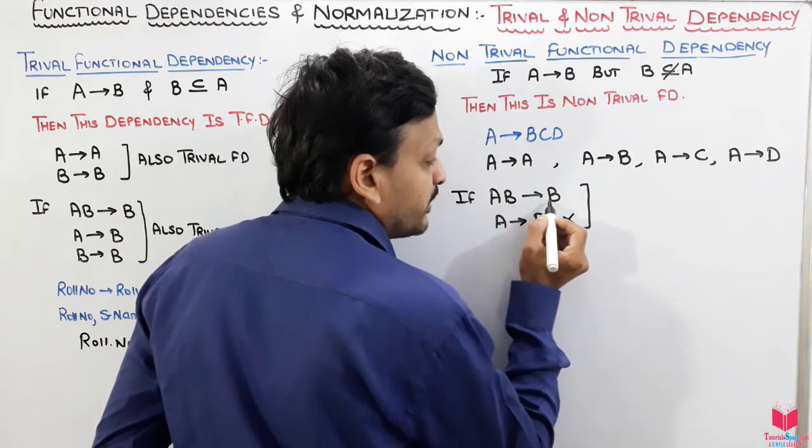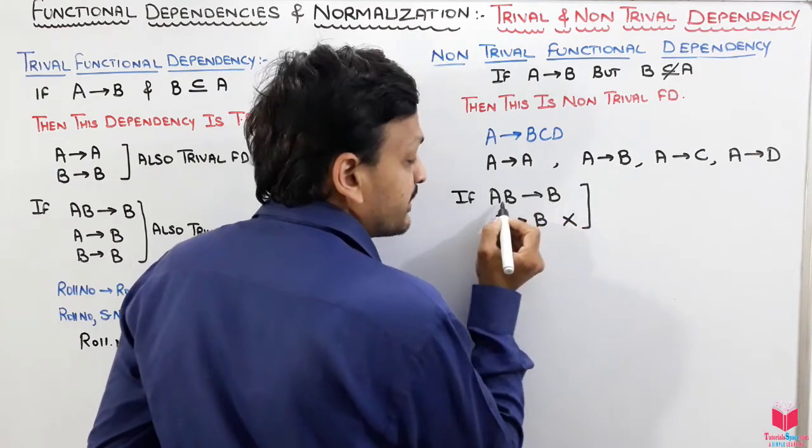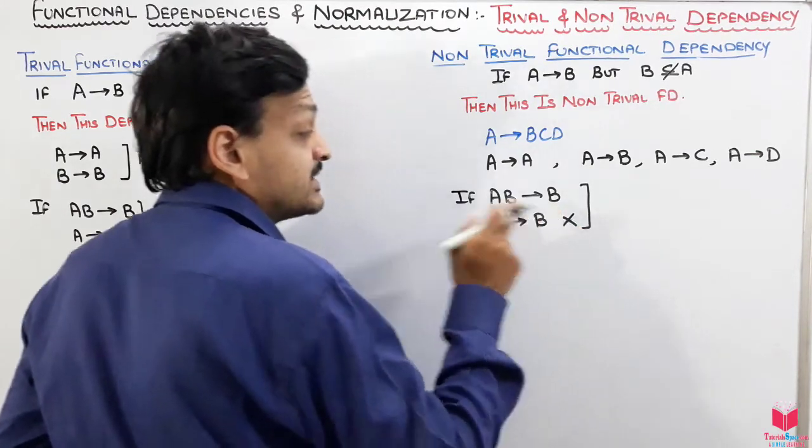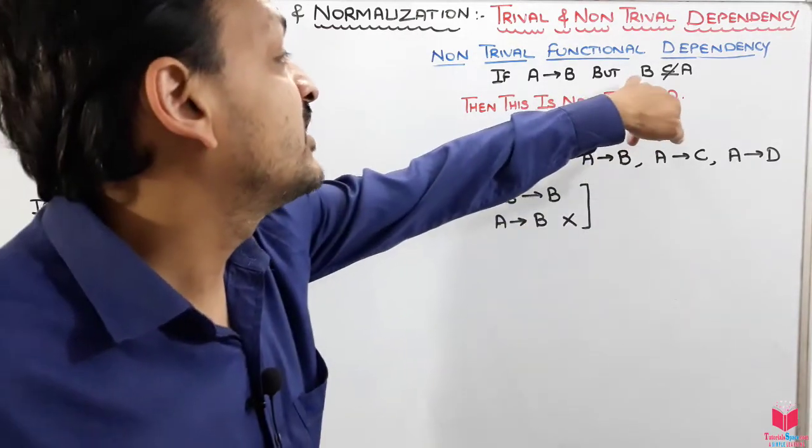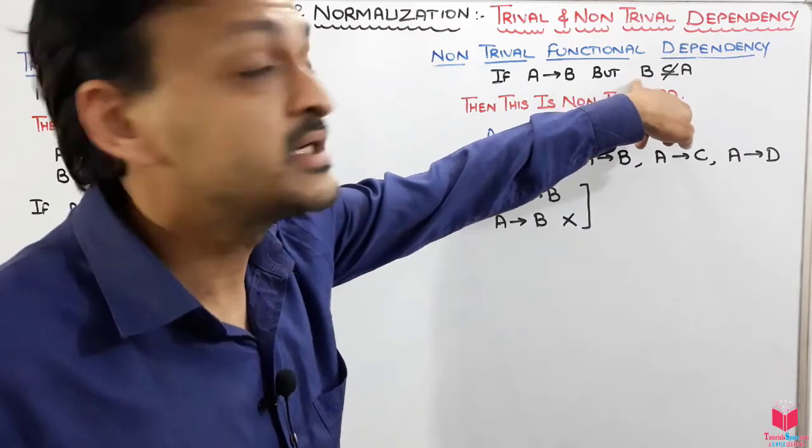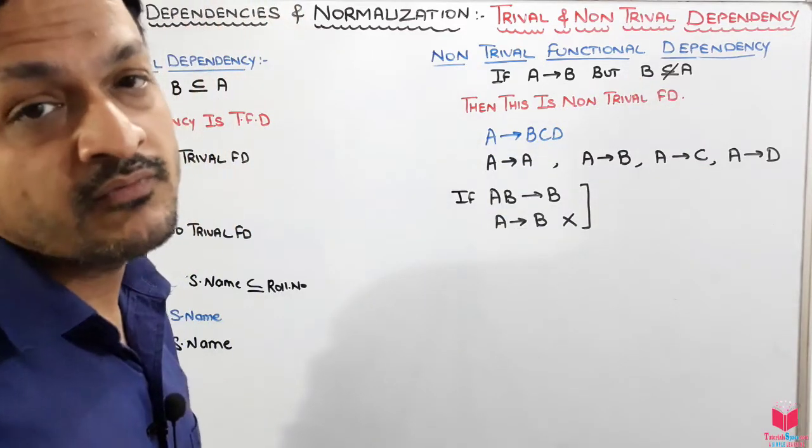If from AB to B, that means B is functionally dependent on AB, but that does not mean that we can find the B value from A because we have given this condition that B is not a subset of A here.